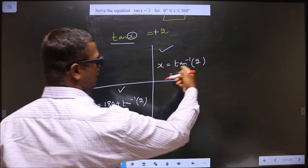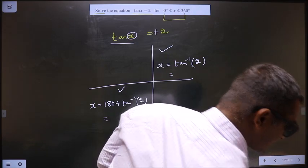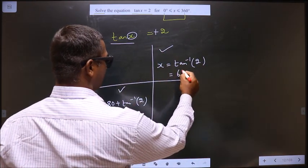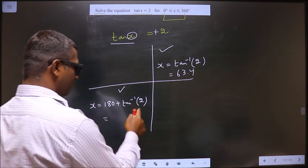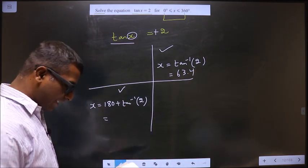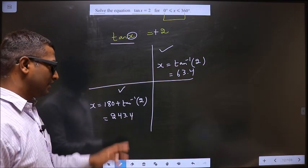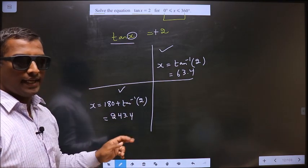Now put this in the calculator. We get the answer to be 63.4. Put this in the calculator. We get the answer to be 243.4. These are the values for x.